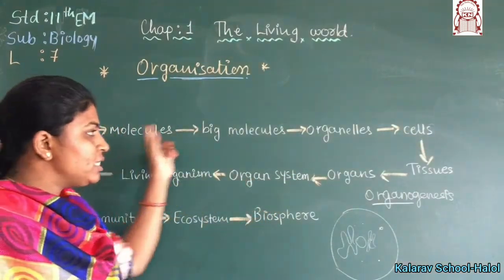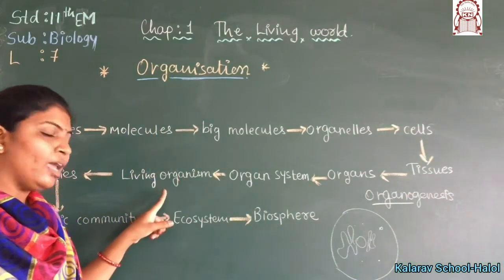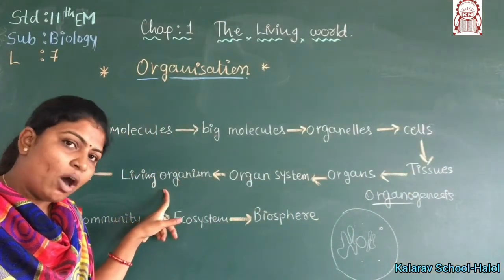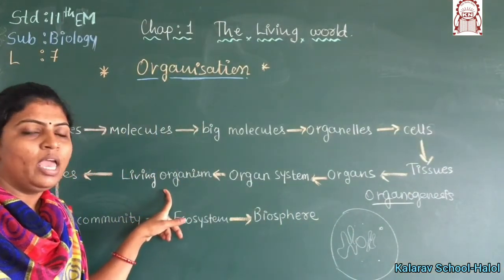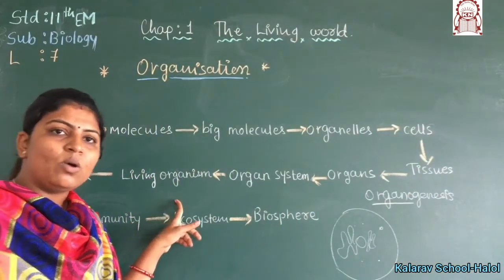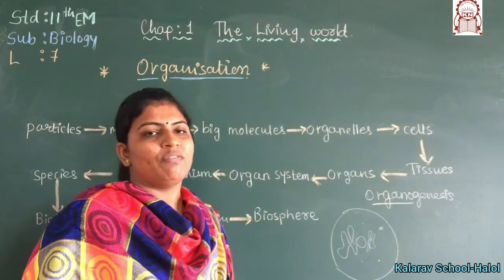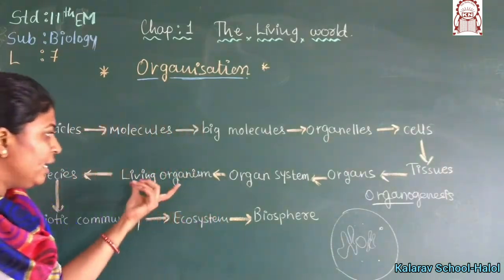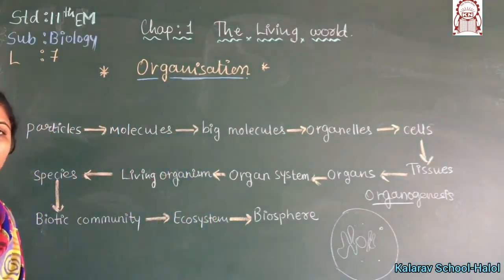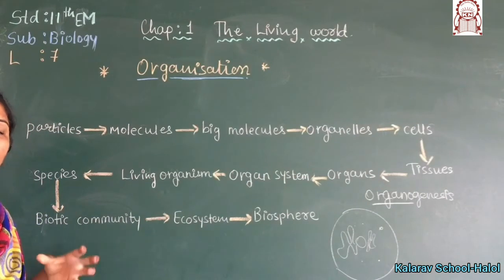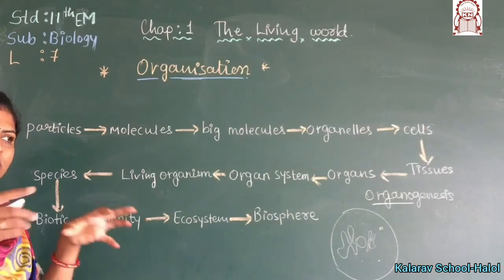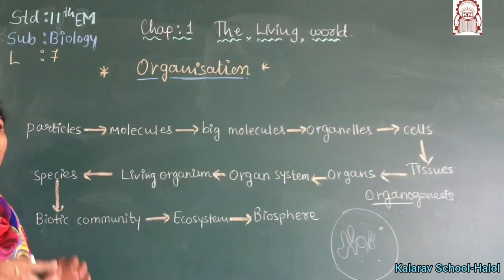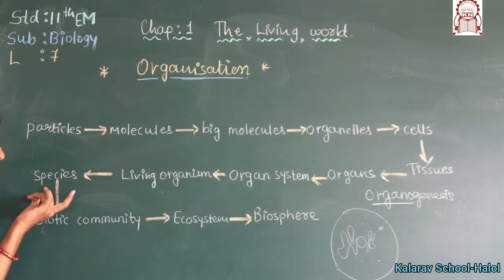After all this, the living organism is formed. You should know that a living organism is formed through these levels. The same type of living organisms are combined together and they form a species.